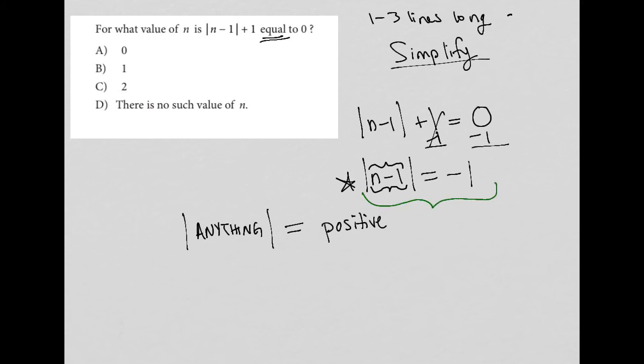So when I look at the answers, the only one that makes sense would have to be choice D, that there is no such value of n. No matter what I plug inside of this n, I can never get a negative number if I take the absolute value. So that's how I would do it.